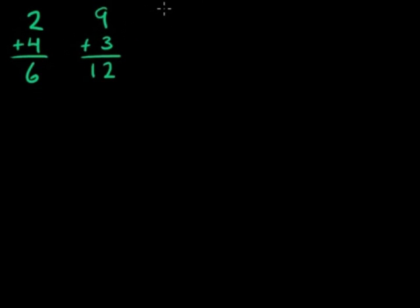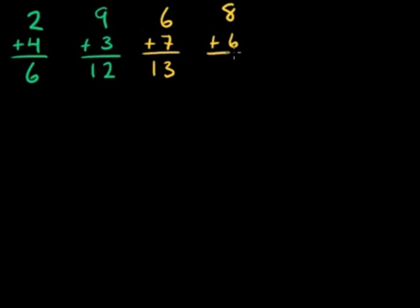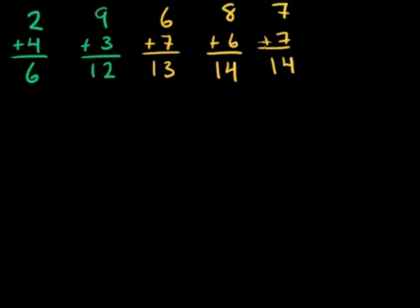6 plus 7 — this one I always used to find difficult to remember, but 6 plus 7 is 13. Draw out the number lines and lemons and limes if you don't believe me. 8 plus 6, or 6 plus 8, is going to be 14. And 7 plus 7 is also 14 — we took 1 away from 8 but had 1 more than 6, so it's like you just shifted the 1. That's why we got the same answer.